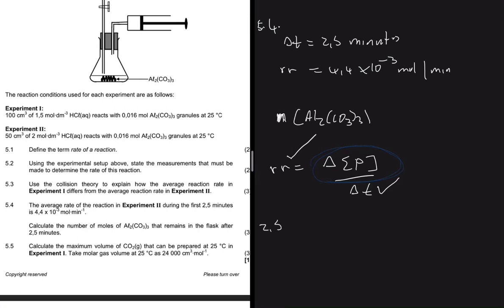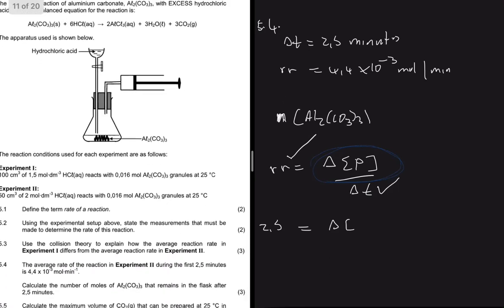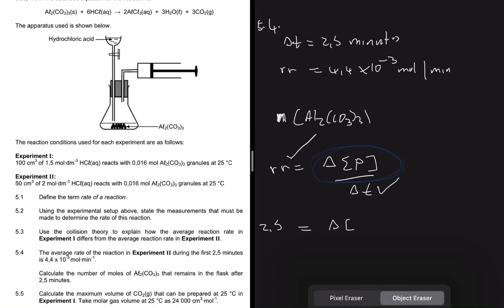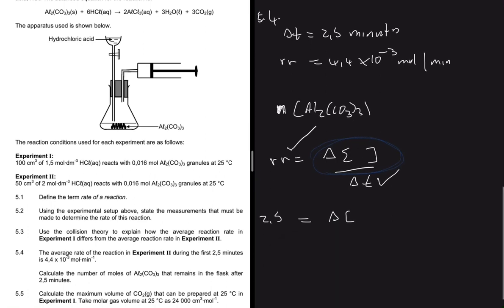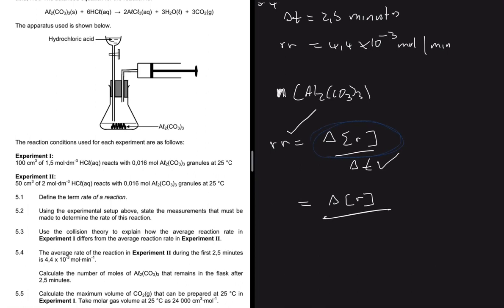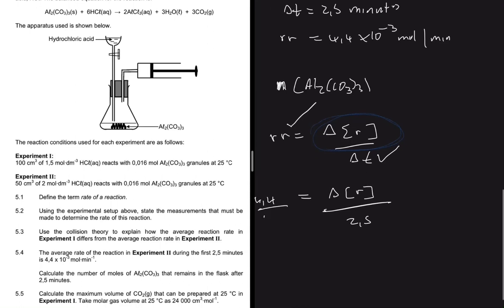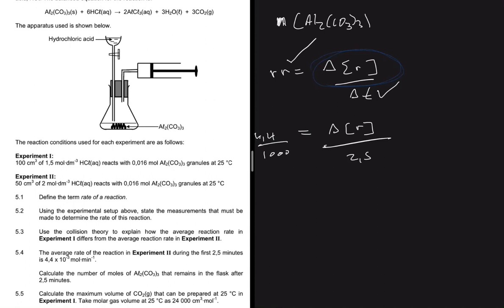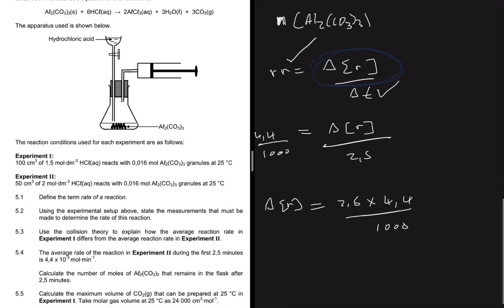The reaction time is 2.5 minutes. Note that aluminium carbonate is the reactant, not the product, so we use the change in concentration of the reactant. Rearranging: change in concentration = rate × time = 4.4 × 10⁻³ × 2.5, which equals 2.5 multiplied by 4.4 divided by 1000. Putting that into the calculator gives us 0.011.